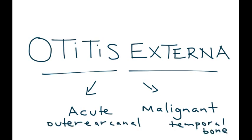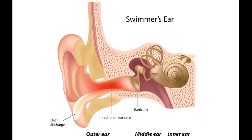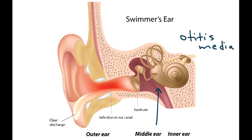Starting with acute otitis externa, here is a cross-section photo of the ear. This part is the middle ear, and an infection there is called otitis media. This video is about otitis externa — an infection of the outer ear — shown here in red. Otitis externa is sometimes referred to as swimmer's ear.